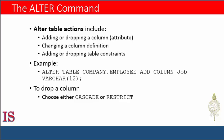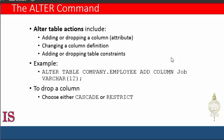The definition of a base table or other named schema elements can be changed using the ALTER command. For base tables, the possible ALTER TABLE actions include adding or dropping a column or attribute, changing a column definition, and adding or dropping table constraints. We can add a column as demonstrated in this example: ALTER TABLE COMPANY.EMPLOYEE ADD COLUMN JOB VARCHAR(12); — and that will add a column JOB to the EMPLOYEE table.